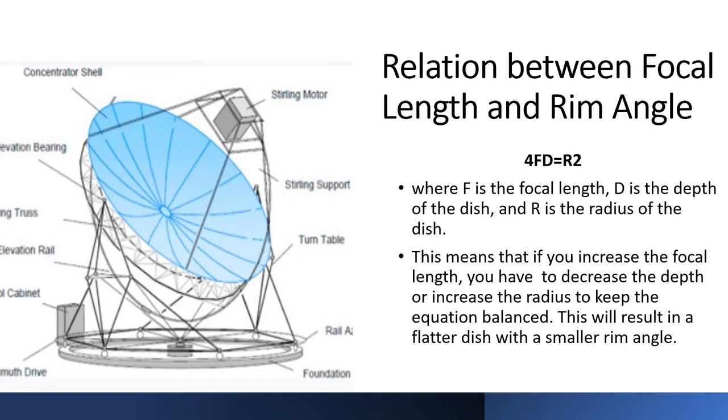The relation between focal length and rim angle is explained by the formula 4FD = R². Where F is the focal length, D is the depth of the dish, and R is the radius of the dish. This means that if you increase the focal length, you have to decrease the depth or increase the radius to keep the equation balanced. This will result in a flatter dish with a smaller rim angle.